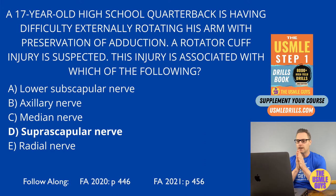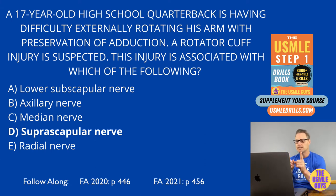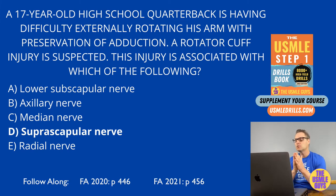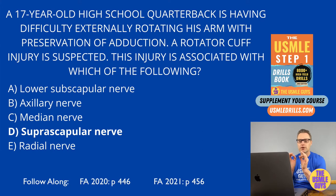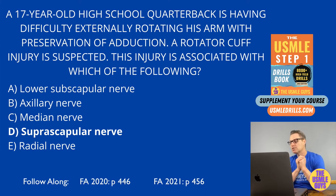The most common rotator cuff injury is to one specific muscle: the supraspinatus. This is responsible for abducting the arm prior to the deltoid taking over after 15 degrees, and it also stabilizes the humerus during arm movement.